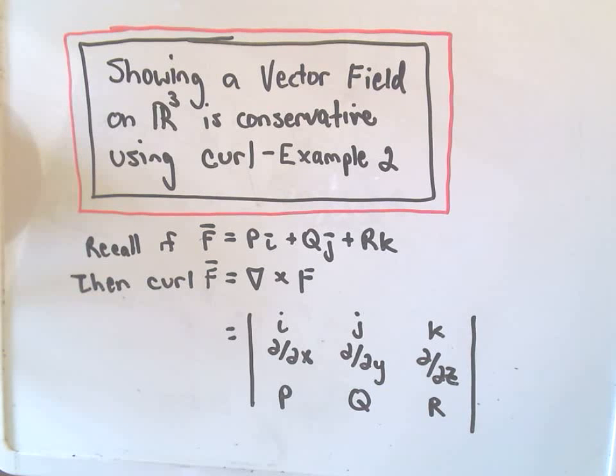Okay, in this video I just want to do another example showing that a vector field on R3 is conservative using the curl.